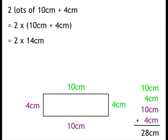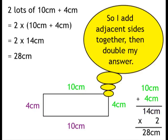So 10 plus 4cm is 14cm, and then I need to double that 14cm, which gives me 28cm. So a quicker way of doing this calculation is add together adjacent sides, and then double your answer.